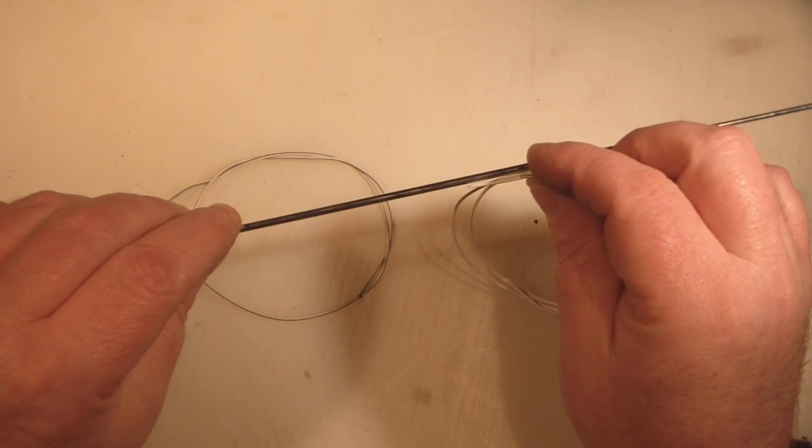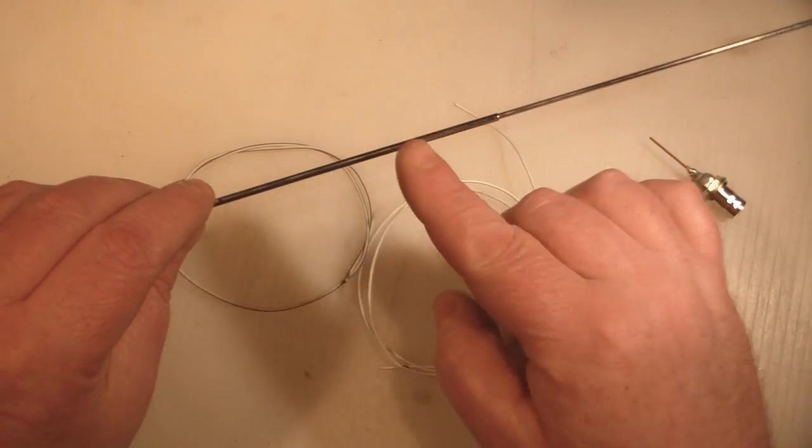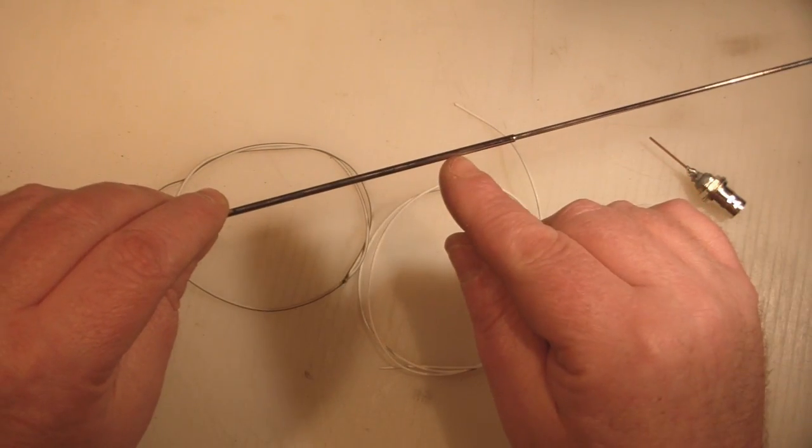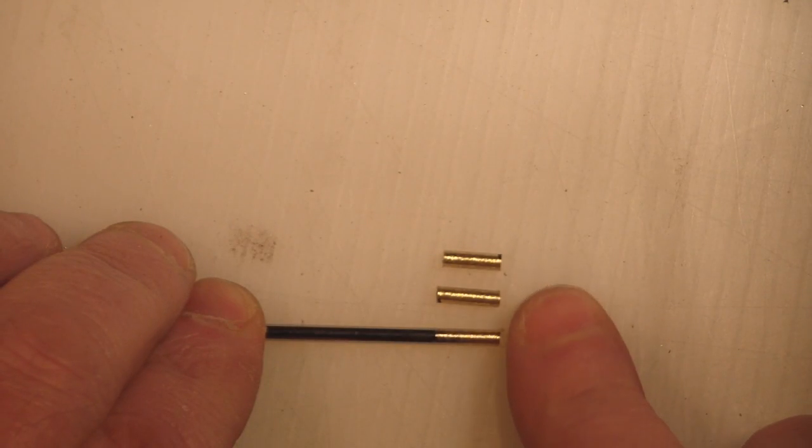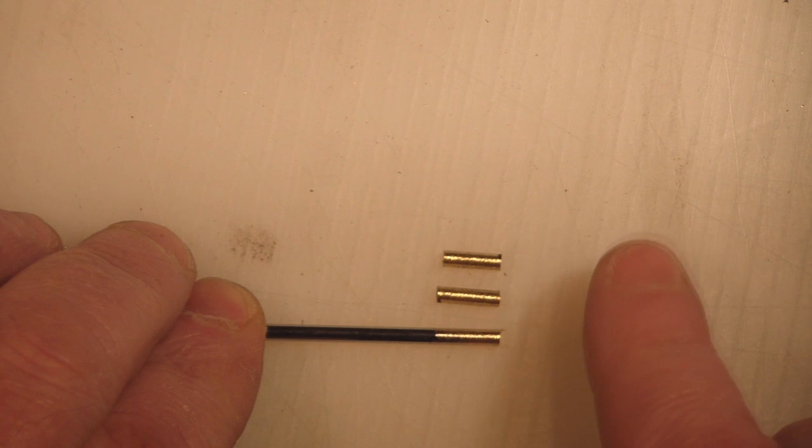I'm going to chop out this section here and feed the coax up into that, then solder this onto a hole that I make in the can. I've cut off two pieces of the tubing, just 10 millimetres long. The length doesn't really matter to the antenna itself.